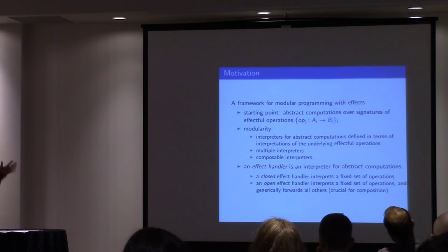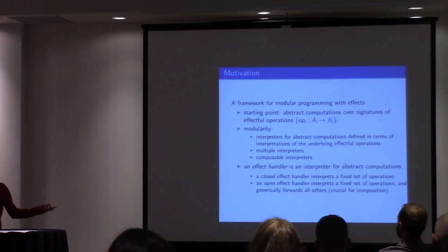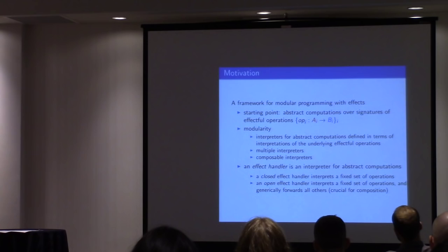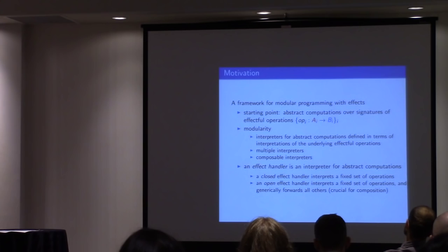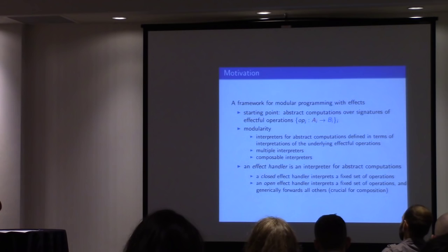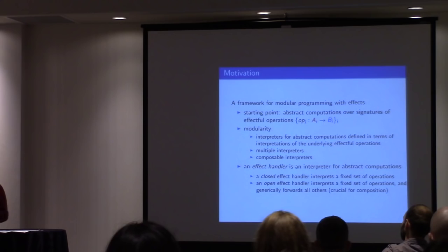So this is what an effect handler is essentially — an interpreter for abstract computations. In its simplest form, we have closed effect handlers where you have a fixed set of operations and you say how they're interpreted. But in order to be composable, we also want open effect handlers, where we specify how to handle, say, the get and put operations, and any other operations just get forwarded through to the output. It generates another abstract computation, and then you can combine that with other handlers.